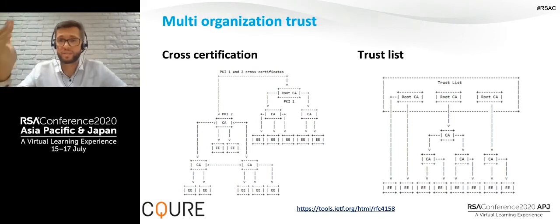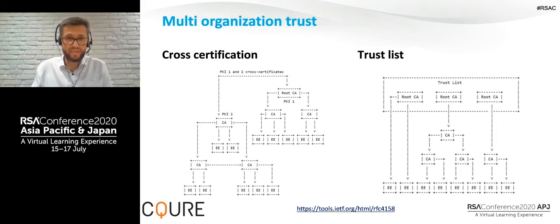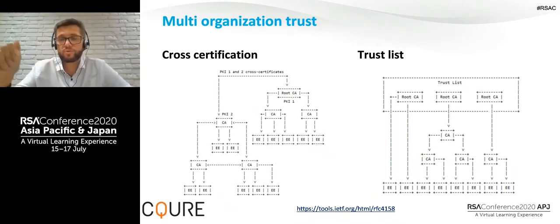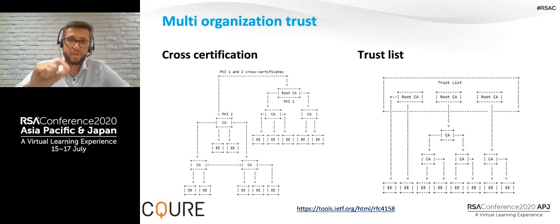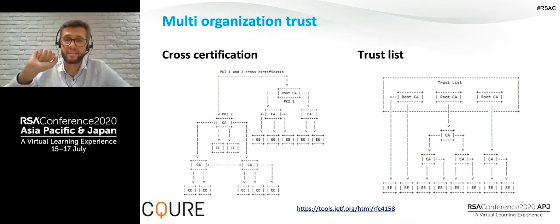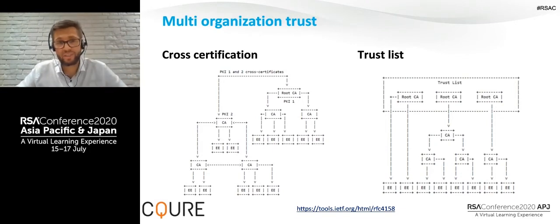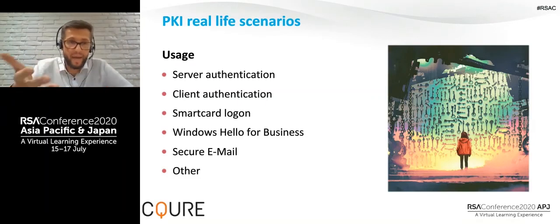Instead of blindly trusting all certificates from another organization, we can use cross-certification — issuing a special certificate that restricts trust to only the names that the other company has, such as a specific DNS suffix or email suffix. This is extremely important: don't trust the root CA of another organization if you're not really prepared to trust all certificates they issue.